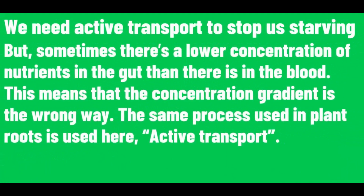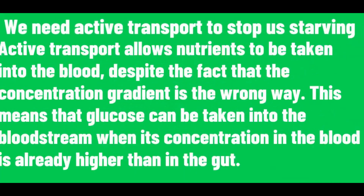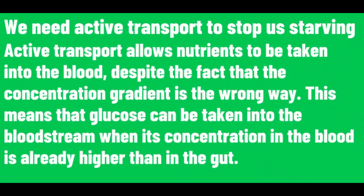But sometimes there is a lower concentration of nutrients in the gut than there is in the blood. This means that the concentration gradient is the wrong way. The same process used in plant roots is used here — active transport. Active transport allows nutrients to be taken into the blood, despite the fact that the concentration gradient is the wrong way. This means that glucose can be taken into the bloodstream when its concentration in the blood is already higher than in the gut.